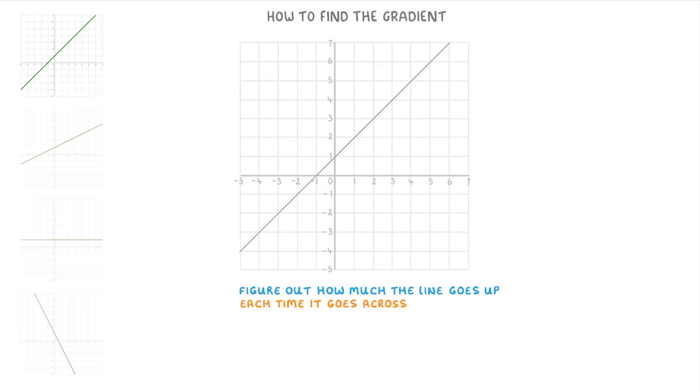For example if we pick any point along our line like this one here and we draw little dashed lines going across by one and then up until we meet the line, we can see that for every one that it goes across to the right it also goes up by one. So the gradient of this line is one. And we'd have found the same gradient no matter where we looked along our line.